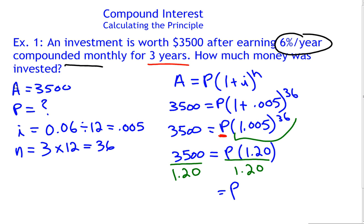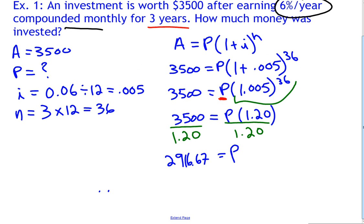Plugging that into the calculator, we get $2,916.67. So that means that the principal, the amount invested, was $2,916.67.